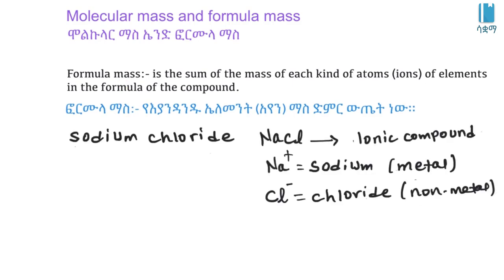For example, ionic compounds such as sodium chloride, potassium chloride, and magnesium chloride do not exist as individual molecules. Instead, we refer to the formula unit. The formula unit represents the simplest ratio of ions in the ionic compound.